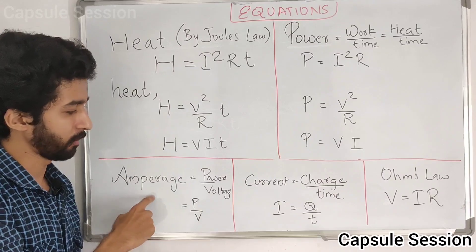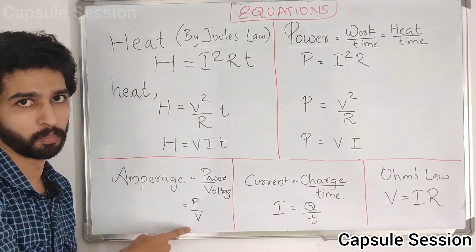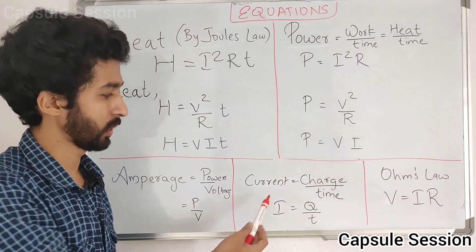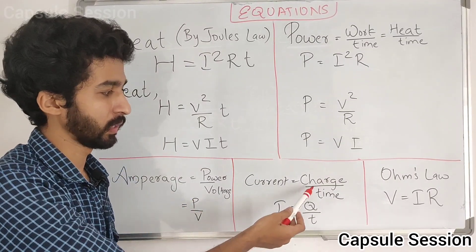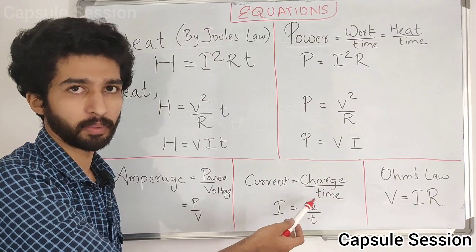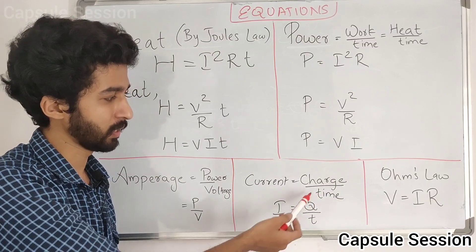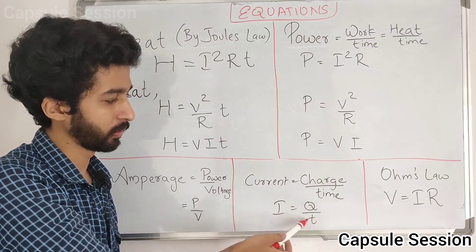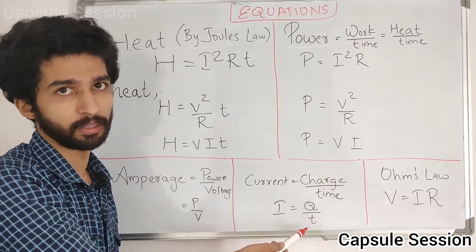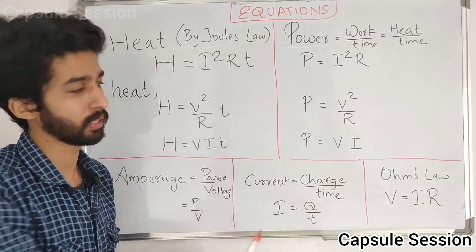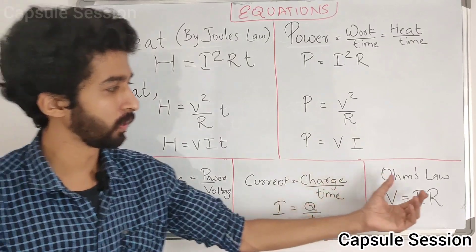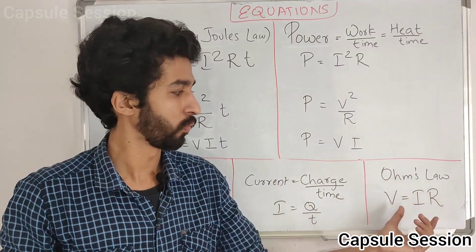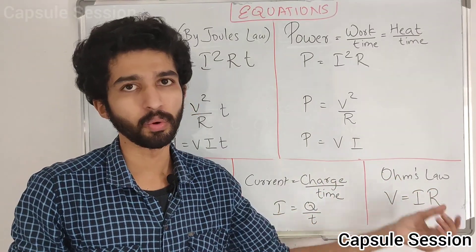We use i is equal to Q divided by time. That's what we learned. That's why we learned Ohm's Law: V is equal to i times R.